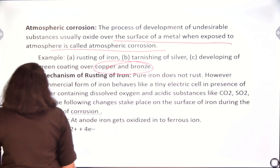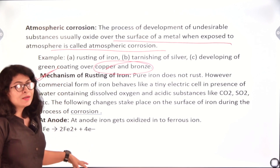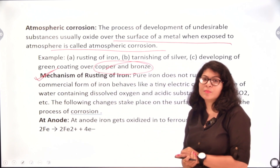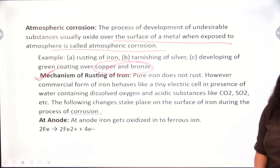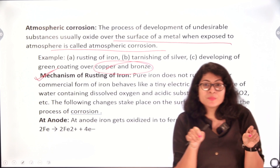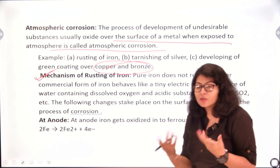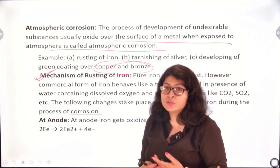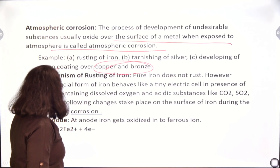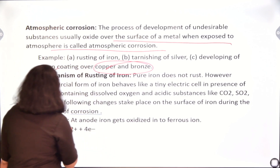Now the mechanism of rusting of iron — this is a very important part of the chapter. How exactly does it happen? Pure iron does not rust; however, the commercial form of iron behaves as a tiny electrical cell, similar to an electrolytic cell we have learnt about. The metal surface behaves like that in the presence of water — iron rusts when it comes in contact with moisture containing substances like carbon dioxide, SO₂, etc. The following changes take place on the surface of iron during the process of corrosion.